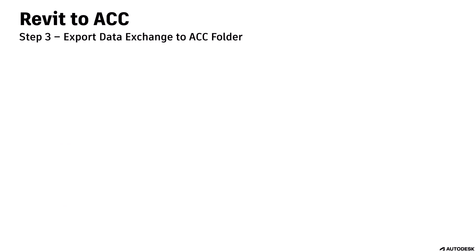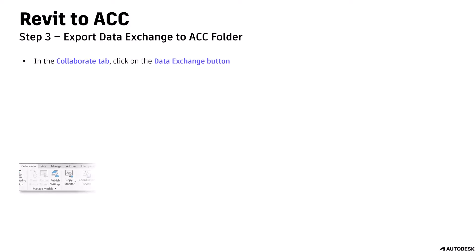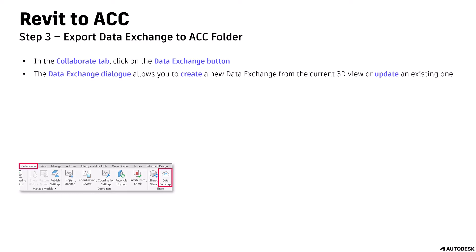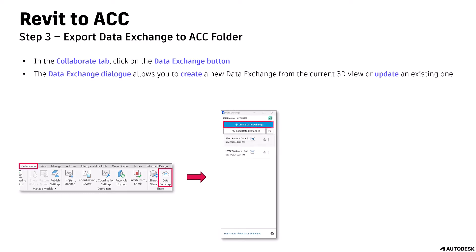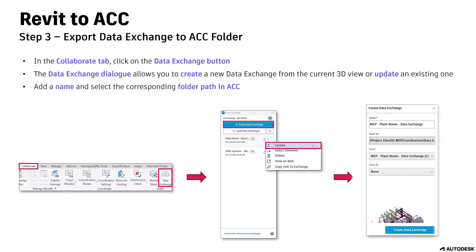Step 3: export the data exchange to the ACC folder. In the Collaborate tab, click on the Data Exchange button. The Data Exchange dialog allows you to create a new data exchange from the current 3D view or update an existing one. Add a name and select the corresponding folder path in ACC. Click on Create Data Exchange. You will now be able to view and open the data exchange files in ACC.